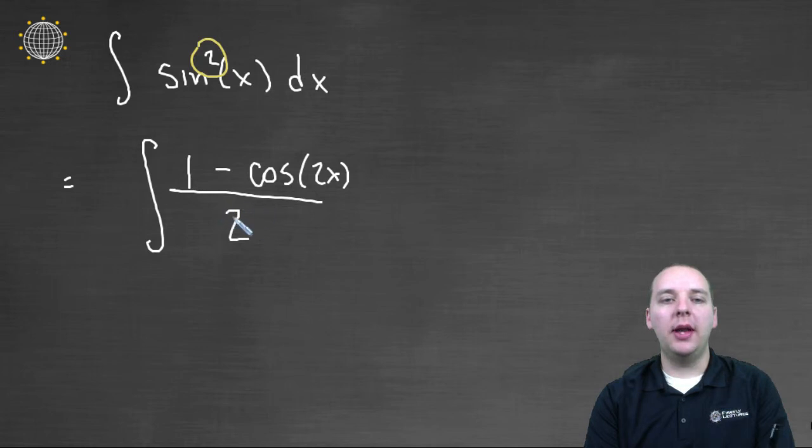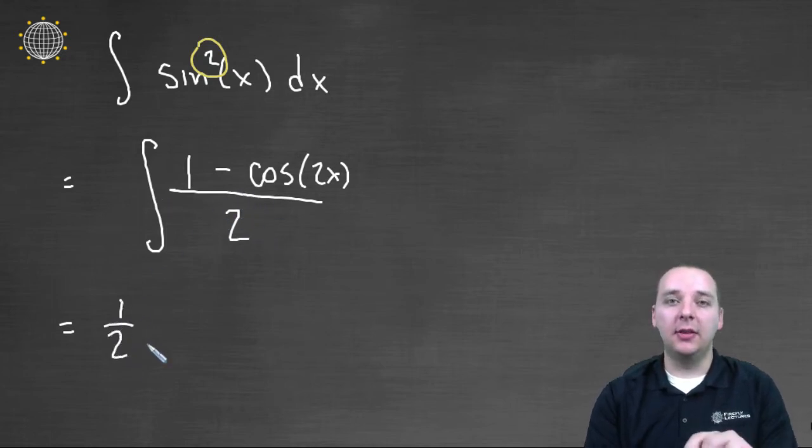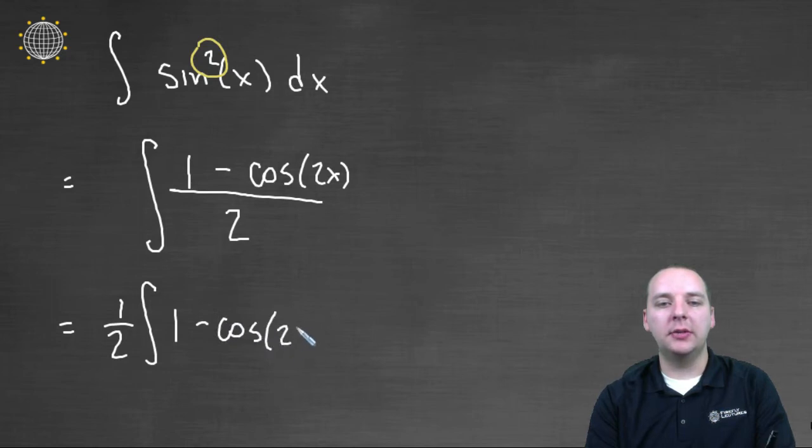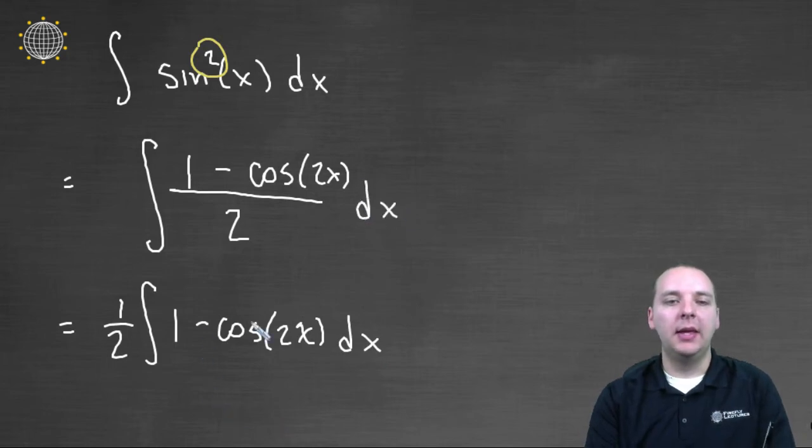But because all we have is even powers, here's what we can do. We can use that power reducing formula and write this as the integral of (1 - cos(2x))/2. I see the two in the denominator, so that's a common factor of a half of the whole thing. So I can pull a one half outside the entire integral. And what's left on the inside is 1 - cos(2x) dx. And this is integrable. This isn't squared. That's why the power reducing formulas work so well.